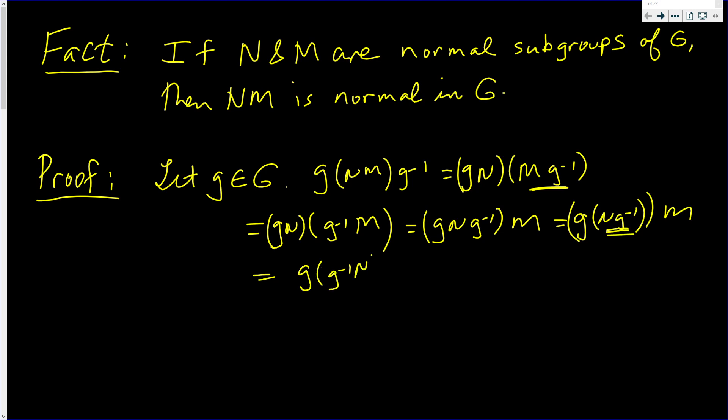This is g inverse N times M, this is g times g inverse times N, M, which is E times N, M, which is N, M.